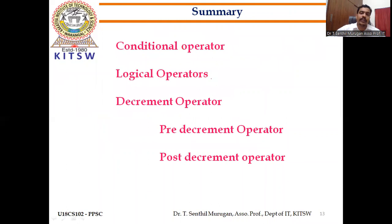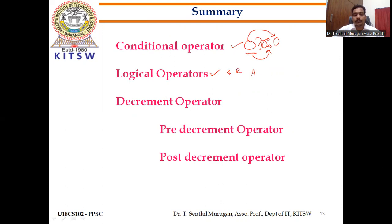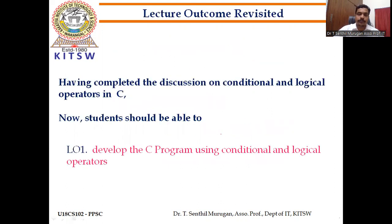To summarize: conditional operators use question mark and colon — also called ternary operators. Expression one is the condition; if true, expression two works; if false, expression three works. Logical operators include AND (&&), OR (||), and NOT (!) operators.